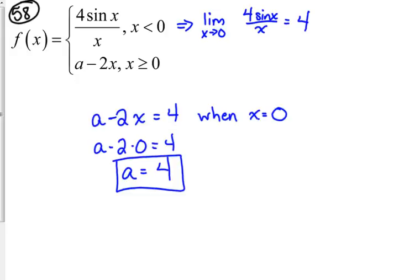Because, other than at 0, sin of x over x is continuous everywhere. And 4 minus 2x is a polynomial, a linear function, so it's continuous everywhere. We just had to make sure that those limits matched at that boundary point.